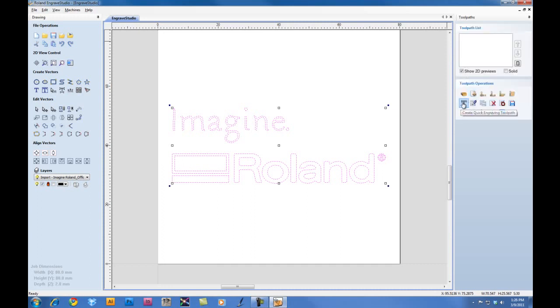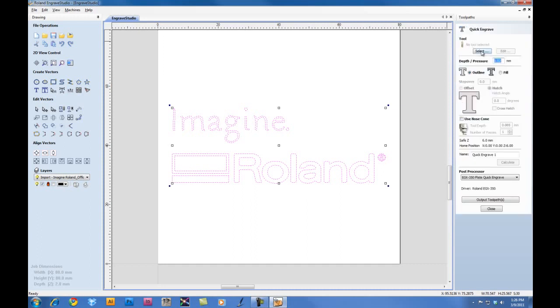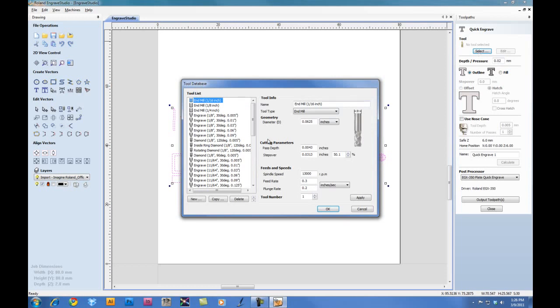Click on the Quick Engraving Toolpath. Under Tool, click on Select. For this job, we are using the Diamond 1/8-inch 120-degree Engraving Tool. For the line width, ensure that the line width is .005 and that the stepover is .0025.